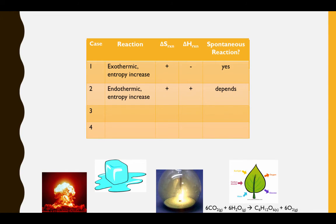Consider the case of a melting ice cube. The melting of an ice cube is an endothermic process, and since we're going from solid to liquid, entropy is increasing. Therefore, we have both a positive delta S and a positive delta H. Our positive delta S is thermodynamically favorable; however, our positive delta H is thermodynamically unfavorable. Therefore, this reaction will be spontaneous at some times and not at other times. Consider when the melting of ice is spontaneous and when it isn't — we'll come back to this.